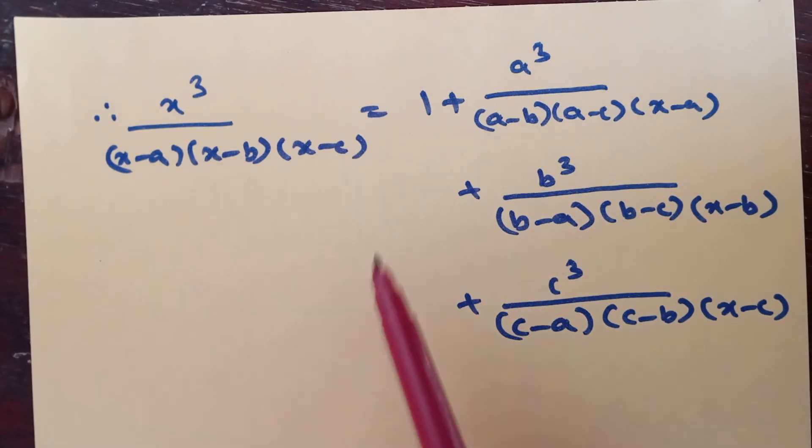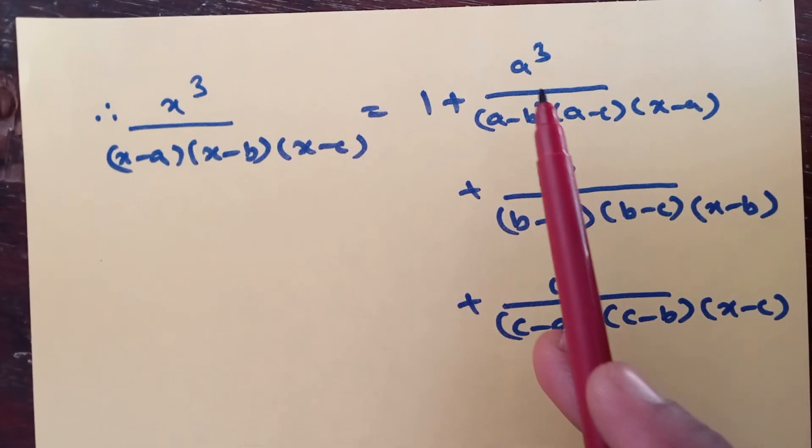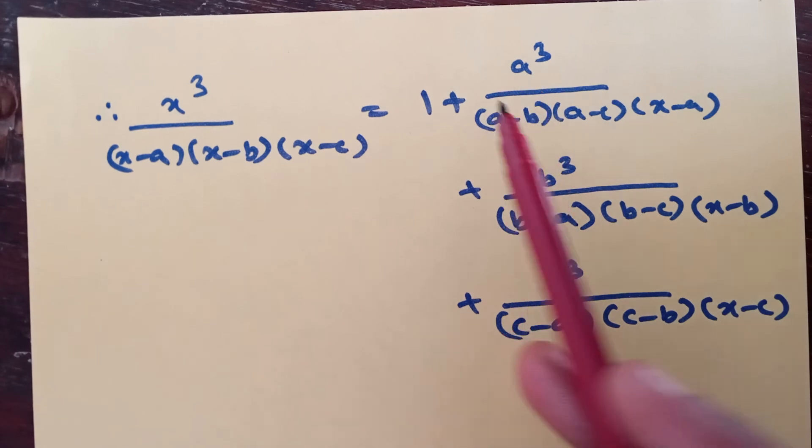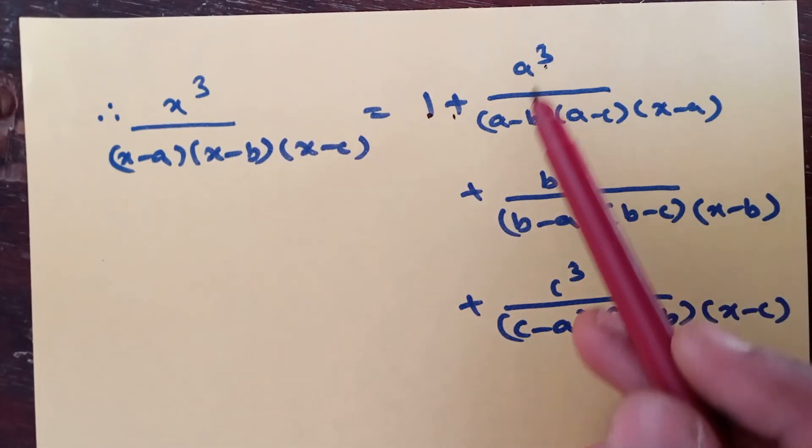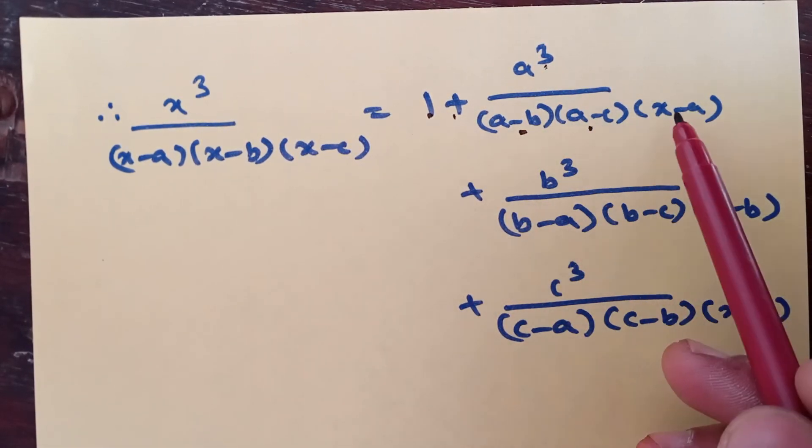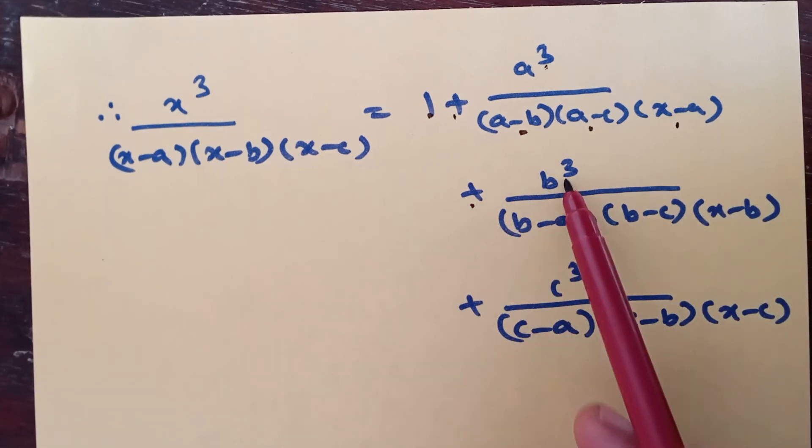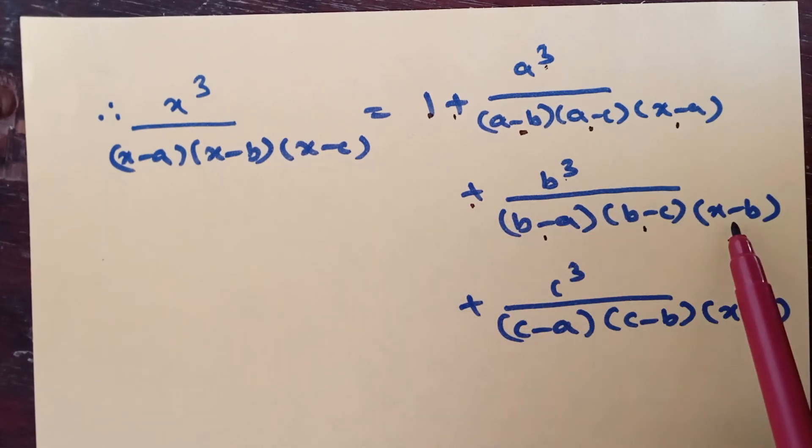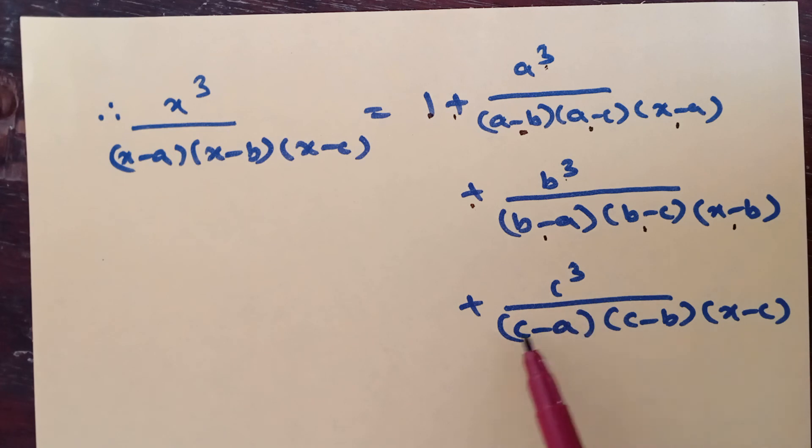Now finally substitute A, B, C values in place of A, B and C. Then result becomes 1 plus a cube by a minus b, a minus c, x minus a, plus b cube by b minus a, b minus c, x minus b, plus c cube by c minus a, c minus b, x minus c.